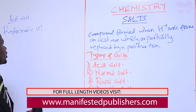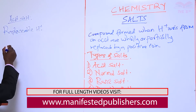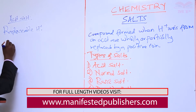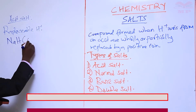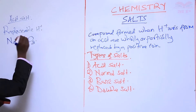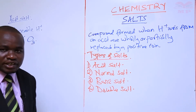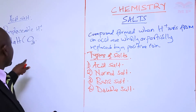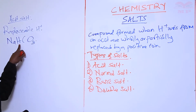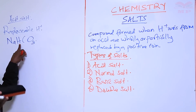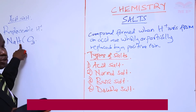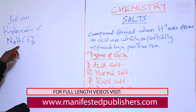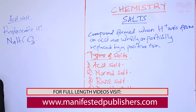Let's look at examples. For example, we have a salt such as sodium hydrogen carbonate. From the formula, learner, we can see that we have a hydrogen ion. This hydrogen ion is the one that will make this salt to be called an acid salt, because it has this hydrogen ion that will give it the acidic properties.